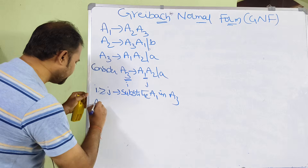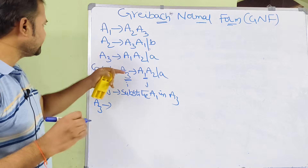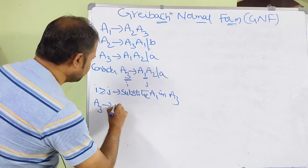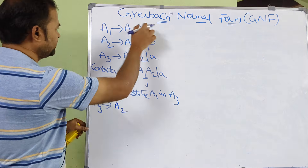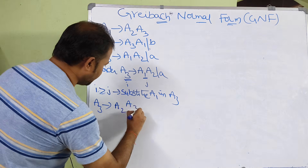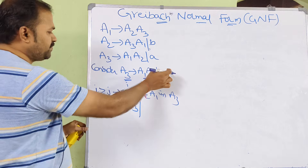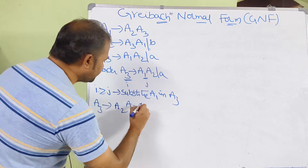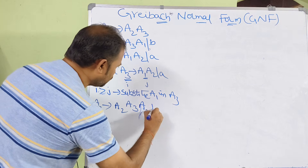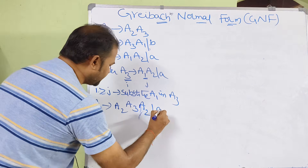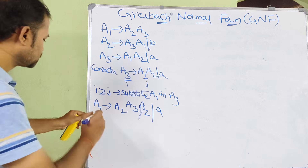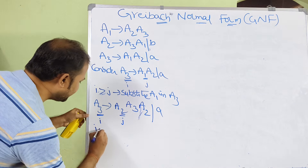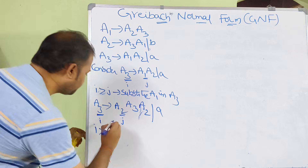After substituting A1 in A3, we get A3 produces A2, A3, A2 or A. Now I value is 3 and J value is 2, so I is greater than J again. We must substitute A2 value in A3.